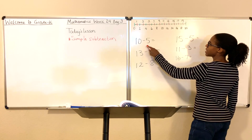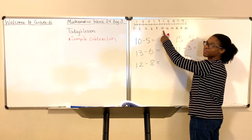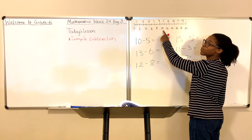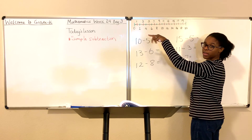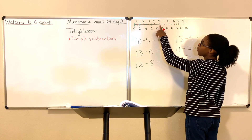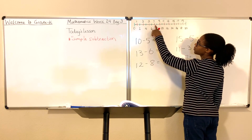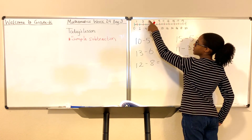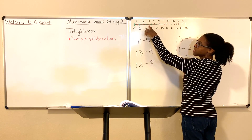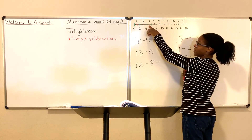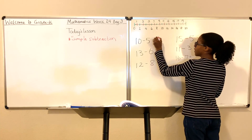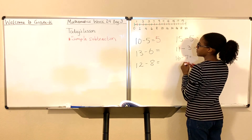Here we go. 10 minus 5. We go up to the number line, find the number 10, and we're going to count down — count away 5. So here we go: 1, 2, 3, 4, 5. There we have it. 10 minus 5 is 5. That number is 5. Good job.